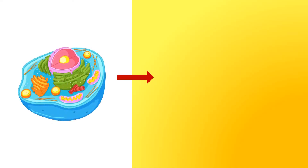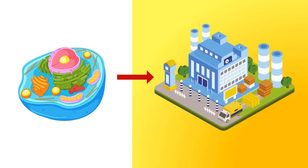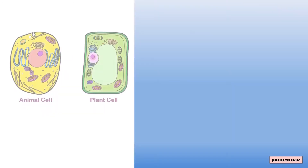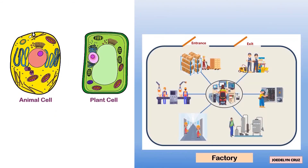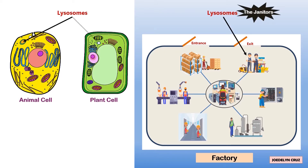In the Cell as Factory analogy, the janitors represent lysosomes. They clean up and break down waste in and around the factory.